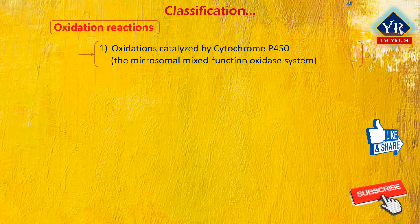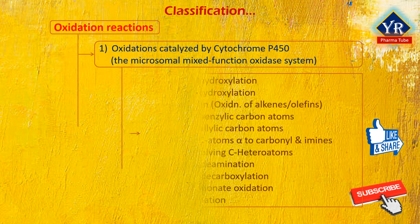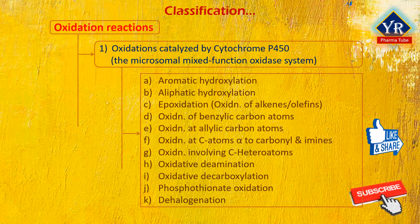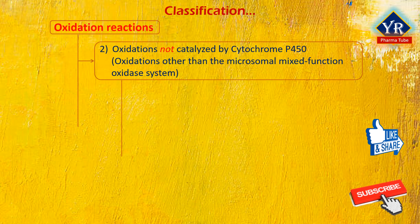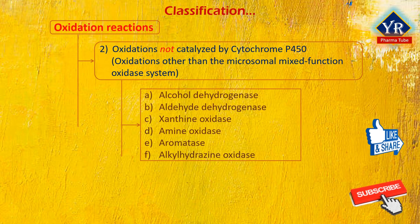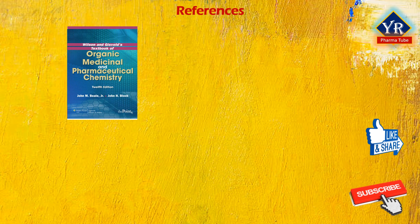The oxidation reactions catalyzed by cytochrome P450 enzyme involve several reactions such as aromatic hydroxylation, aliphatic hydroxylation, epoxidation, oxidation of benzylic carbon atoms, oxidation at allylic carbon atoms, oxidation at carbon atoms alpha to the carbonyl and imine groups, oxidation involving carbon heteroatoms, oxidative deamination, oxidative decarboxylation, phosphothionate oxidation, and dehalogenation. The second type of oxidation reactions, which are not catalyzed by cytochrome P450 enzyme, are catalyzed by specific enzymes such as alcohol dehydrogenase, aldehyde dehydrogenase, xanthine oxidase, amine oxidase, aromatase, and alkylhydrazine oxidase enzymes. This is the list of references followed for the lecture.